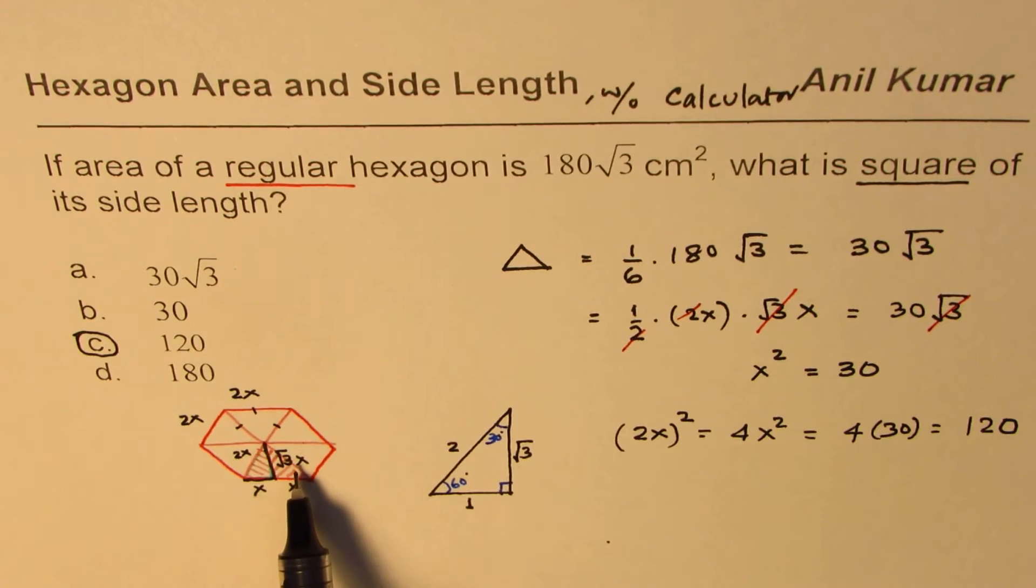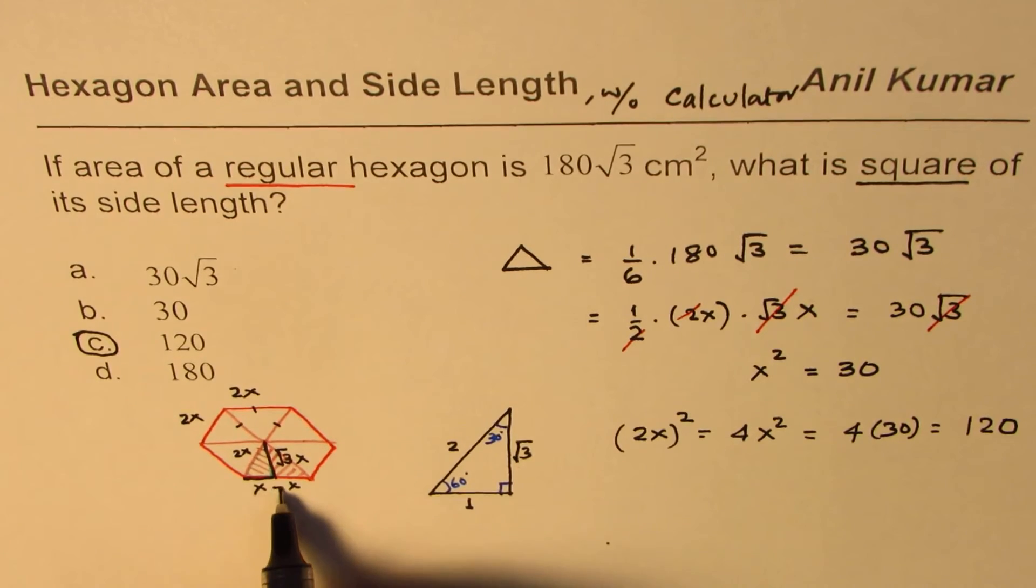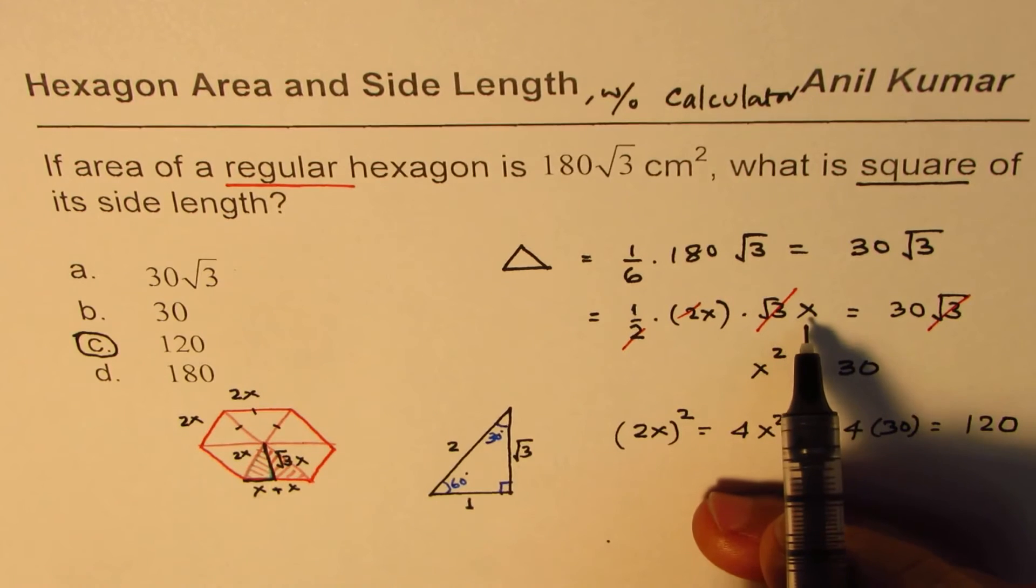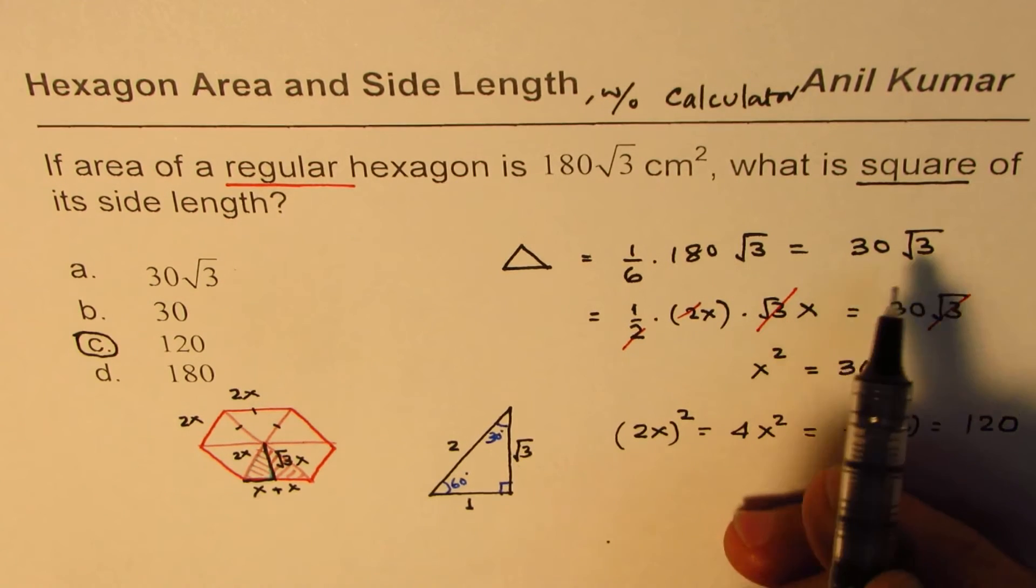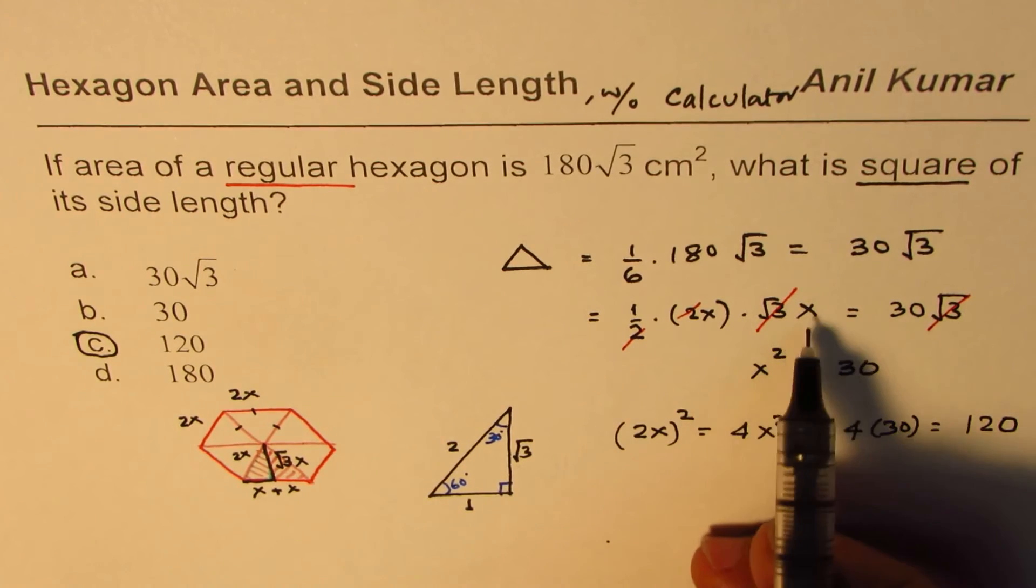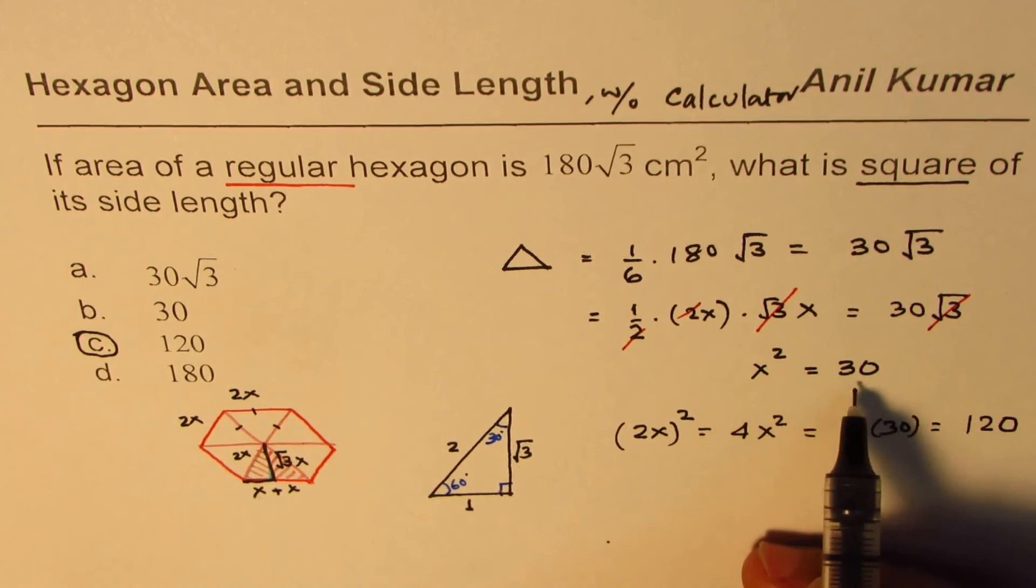And the area will be half base of 2x, which is x plus x, times height, which is square root 3x. That area is known to us as 30 square root 3. So from here you can solve for x squared, which is 30.